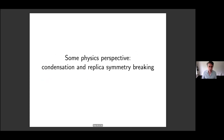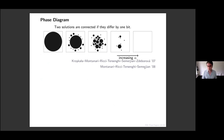Now I want to tell you more about the physics predictions. The study by physicists of these random CSPs started in the 1980s but reached its final form about 14 years ago, when a younger generation of physicists described a series of phase transitions that the models undergo as alpha — the density of constraints — increases.